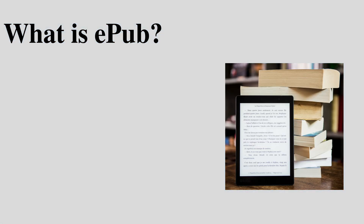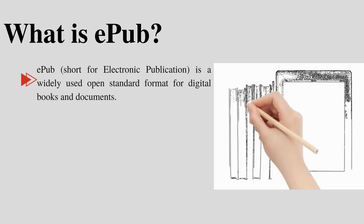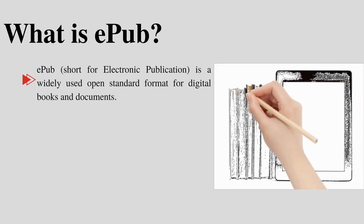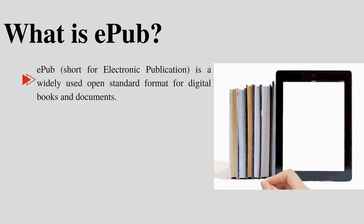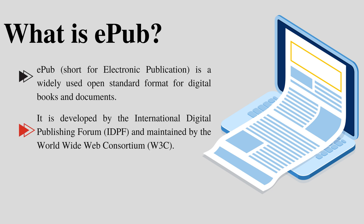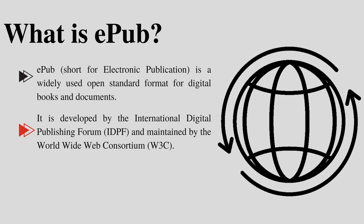What is EPUB? EPUB, short for Electronic Publication, is a widely used open standard format for digital books and documents. It is developed by the International Digital Publishing Forum, IDPF, and maintained by the World Wide Web Consortium, W3C.